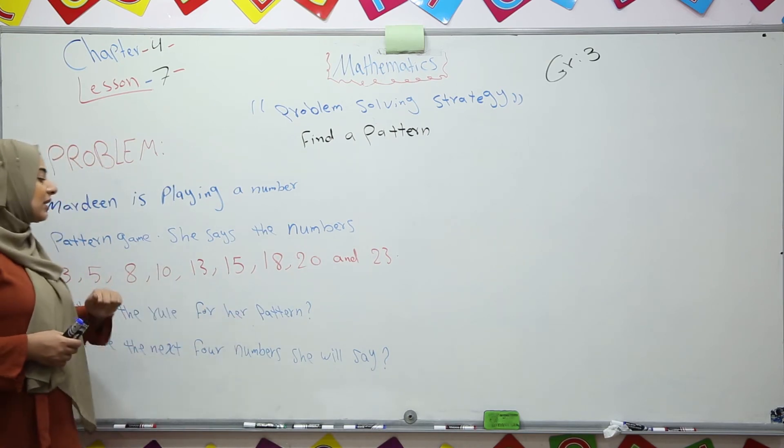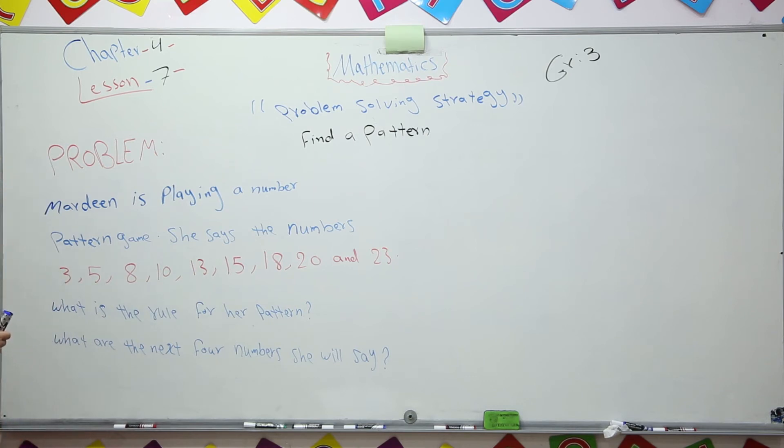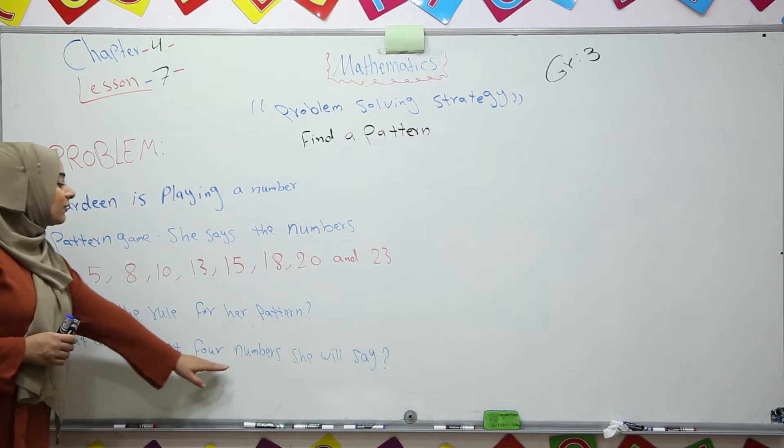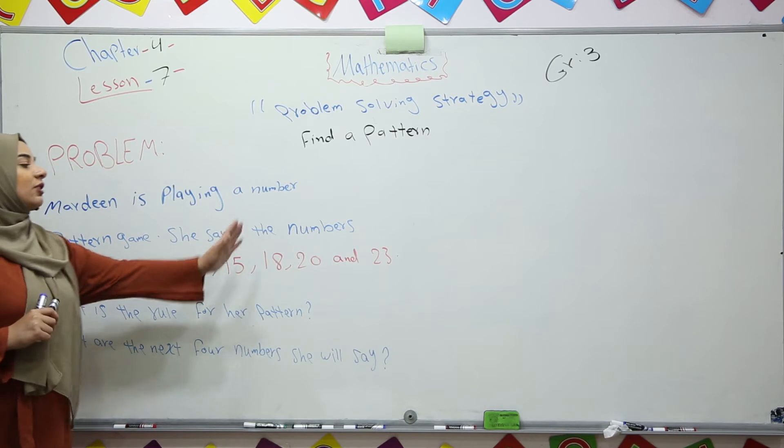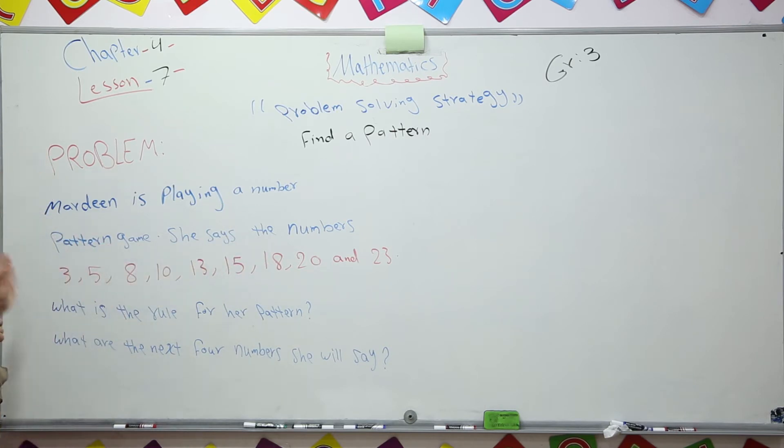What is the rule for her pattern? And what are the next four numbers she will say? What are the next four numbers after 23?